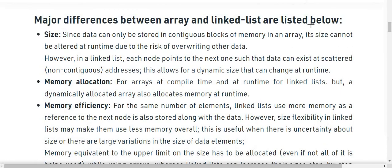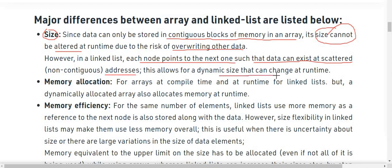Major differences between arrays and linked lists - first one is size. Since the data can only be stored in contiguous blocks of memory in an array, its size cannot be altered at runtime due to risk of overwriting other data. However in linked list, each node points to the next node such that the data can exist at scattered non-contiguous addresses. This allows for dynamic size that can change at runtime.